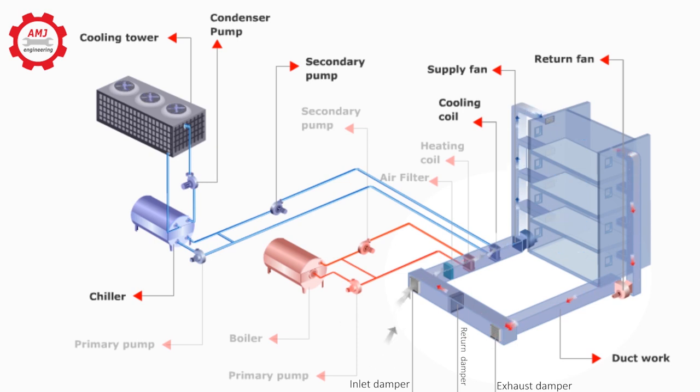If heating is required, the hot water from the boiler is fed to the heating coil using a secondary pump. The water passes through the coil, loses heat and is fed back to the boiler by means of a primary pump. The rest of the flow is the same as in the case of cooling.